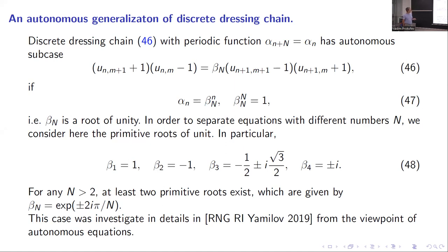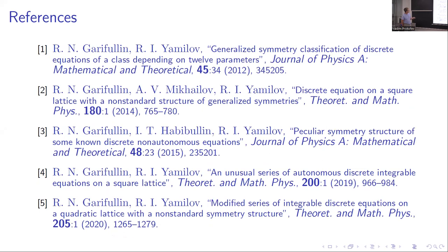But we proved this only for N capital equal to two and equal to three. And here I show the exact references. In the first article, we find equation six — our non-standard quad equation. In this second article, we investigate this non-standard quad equation in detail. Here we found non-autonomous similar examples. And here we investigate the autonomous discrete equation on a square lattice with this unusual property.